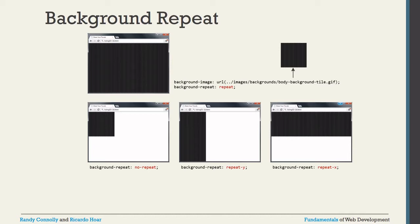With background-repeat, if the image is not large enough to fill the screen, you set background-repeat: repeat — the small image will be repeated to fill the screen. With background-repeat: no-repeat, the image appears only once, typically in the top-left corner. You can also use repeat-y to repeat vertically along the y-axis only, or repeat-x to repeat horizontally along the x-axis only.